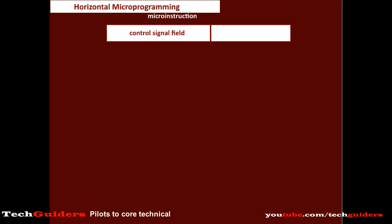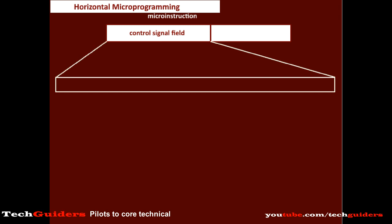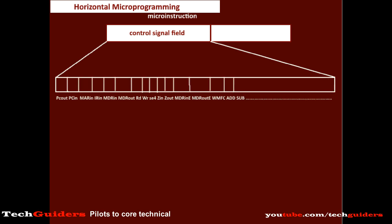In horizontal microprogramming, within each micro instruction in the control signal field, we reserve one bit for every control signal. For example, suppose our system supports a total of 64 control signals — for these 64 control signals we reserve a one-bit space in the control signal field. Thus there will be 64 bits in the control signal field.